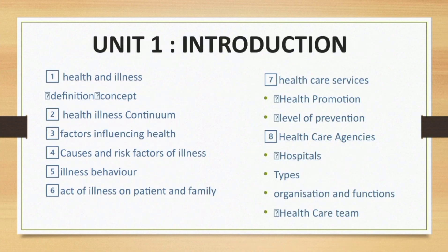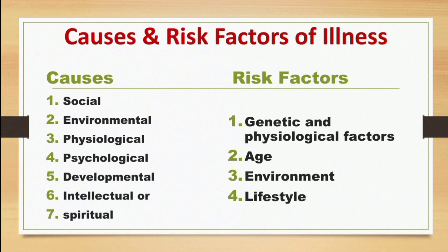Now looking at Chapter 4: Causes and Risk Factors of Illness. The main categories are social causes, environmental causes, physiological causes, psychological, developmental, intellectual, and spiritual. Social causes include early life experiences, mental and physical health issues such as domestic violence, abuse, deprivation, and parental divorce.